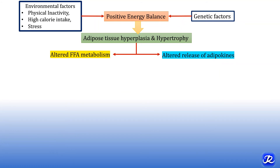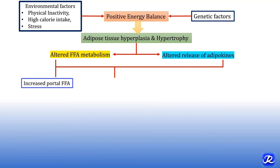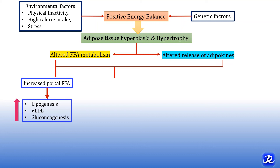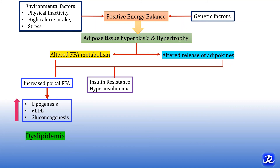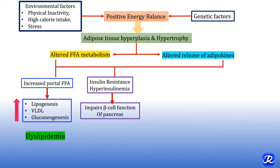In obesity, altered free fatty acid metabolism and altered release of adipokines have several consequences. The first is increased portal free fatty acids, leading to lipogenesis in the liver, increased VLDL synthesis and secretion — since triacylglycerols are packaged as VLDL in the liver — and increased gluconeogenesis, further leading to dyslipidemia and hyperglycemia. Additionally, altered free fatty acid metabolism, inflammation, and altered adipokine release lead to insulin resistance followed by hyperinsulinemia, impaired beta cell function, and ultimately hyperglycemia and type 2 diabetes mellitus.